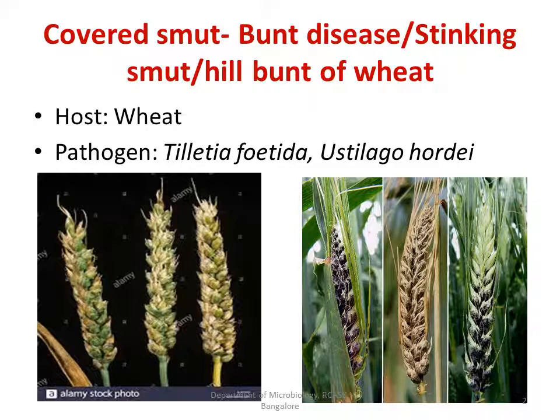It is also called as stinking smut or hill burnt of wheat. This is one of the diseases which was exclusively identified for the first time in India, in Bihar. The name stinking smut is due to the infected grain — once you crush it, it stings like a rotten fish. This particular disease is usually found in wheat as well as in barley.